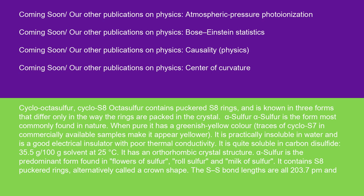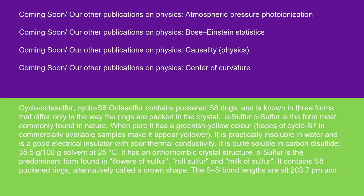Alpha-sulfur is the predominant form found in flowers of sulfur, roll sulfur, and milk of sulfur. It contains S8 puckered rings, alternatively called a crown shape. The S-S bond lengths are all 203.7 pm and the SSS angles are 107.8 degrees with a dihedral angle of 98 degrees. At 95.3°C, alpha-sulfur converts to beta-sulfur.